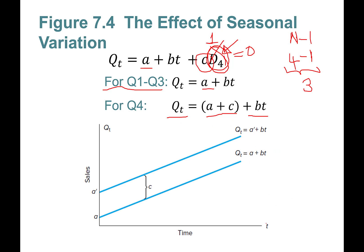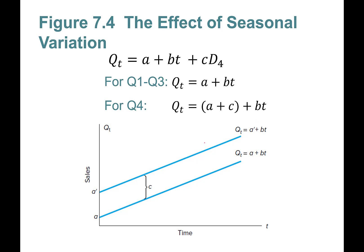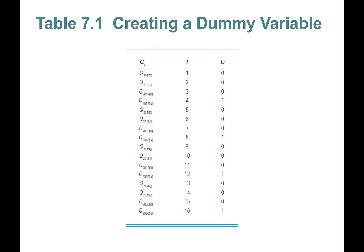Visually, for quarters one, two, and three you estimate one trend line, and for quarter four you estimate a parallel line shifted upward. The data points for quarters one through three follow the lower line, while the fourth quarter observations fall on the higher line — capturing the effect of seasonal variation with the fourth quarter acting differently.